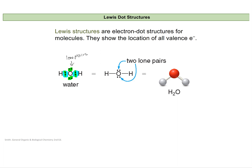It clarifies things if we change the two bonded electrons to a line. This line represents the two electrons being shared between hydrogen and oxygen. This helps the lone pairs stand out from our bonding electrons. We also see things represented as a bond-stick model showing the atoms bonded together with lines as the bonds — here the oxygen is red and the hydrogens are white.